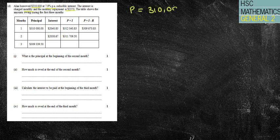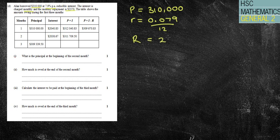So my principal amount is $310,000. We've got an interest rate of 0.079. That's a monthly repayment, and we've got a monthly repayment of $2,370. So this question, you can see here that they give us the first line.